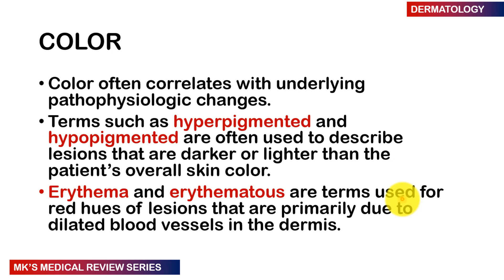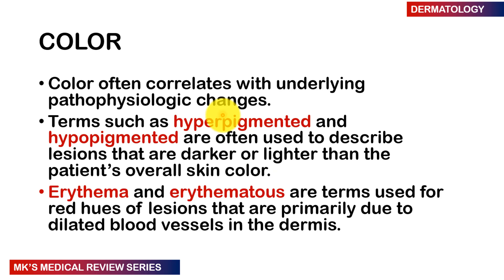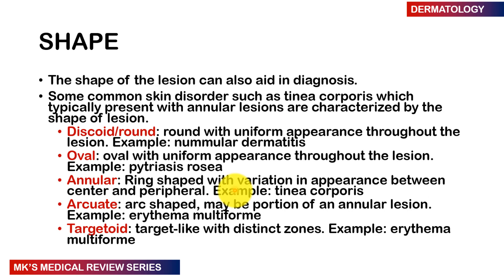When describing skin lesions, several additional principles must be noted. One important factor is the color of the lesion, which can correlate with underlying pathophysiological changes. We use the terms hyperpigmented (darker than surrounding skin) or hypopigmented (lighter than surrounding skin). Erythematous describes red hues primarily due to dilated blood vessels in the dermis.